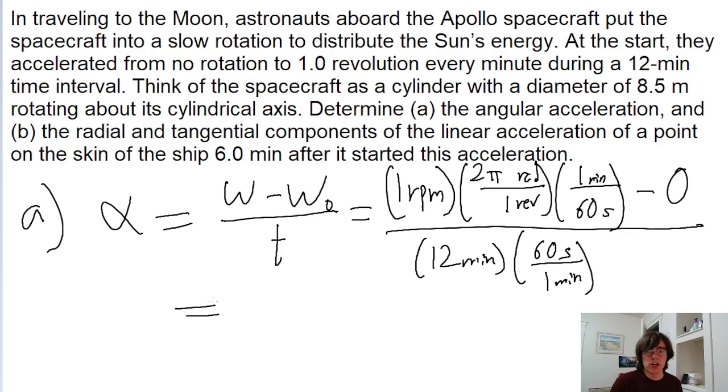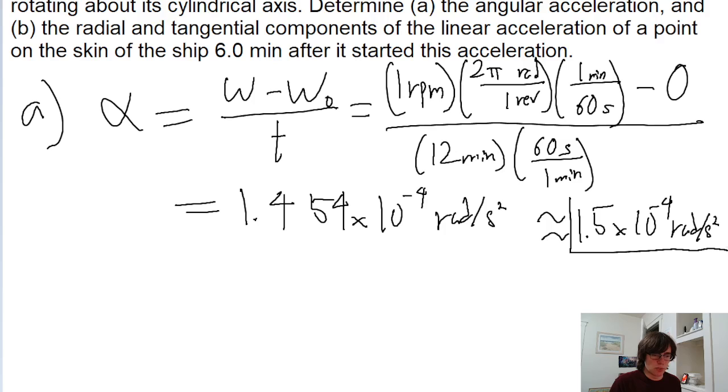If we put that into a calculator, we find an angular acceleration of about 1.454 × 10⁻⁴ radians per second squared, which we'll round as 1.5 × 10⁻⁴ radians per second squared. So that's the answer to part A.